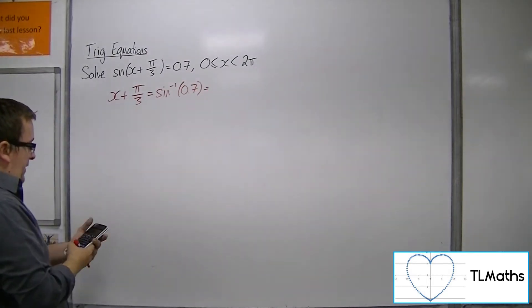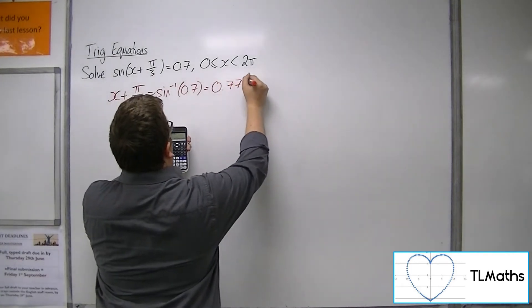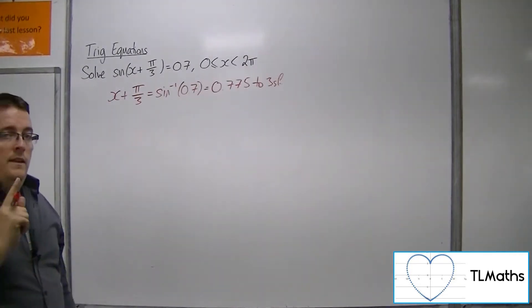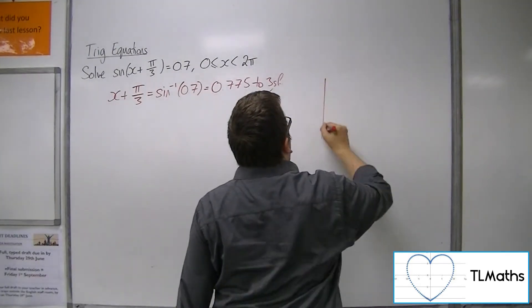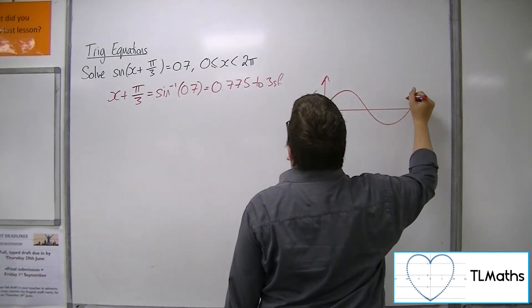Inverse sine of 0.7 is 0.775 to 3 sig fig. Now sketch the original curve of sine, not the translated version.